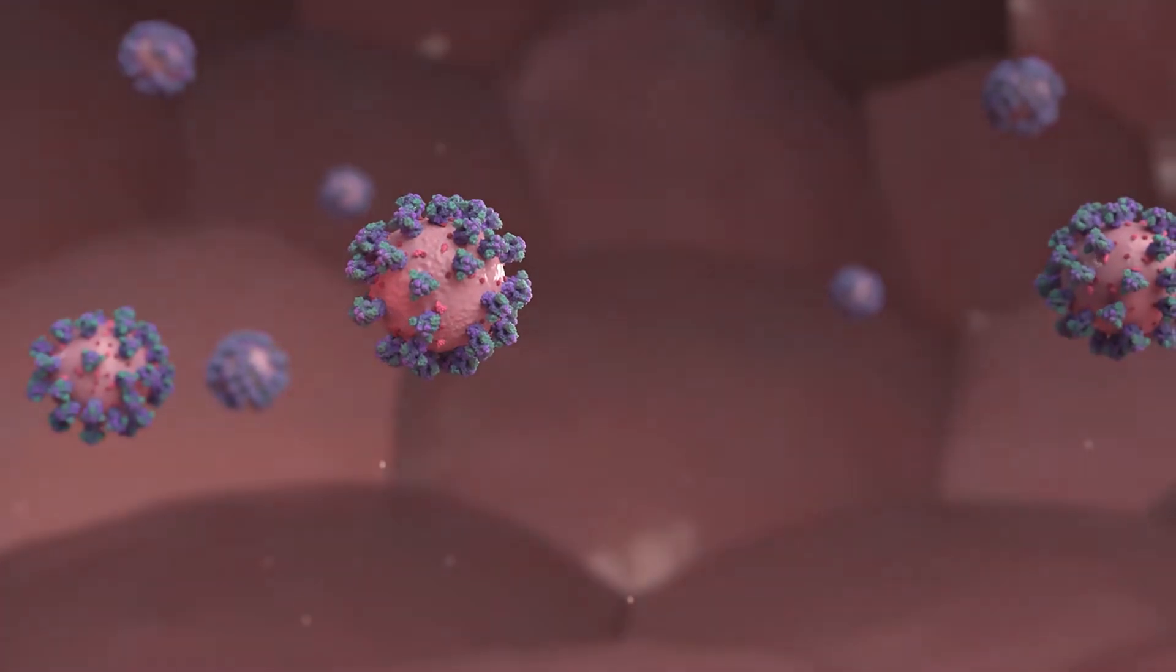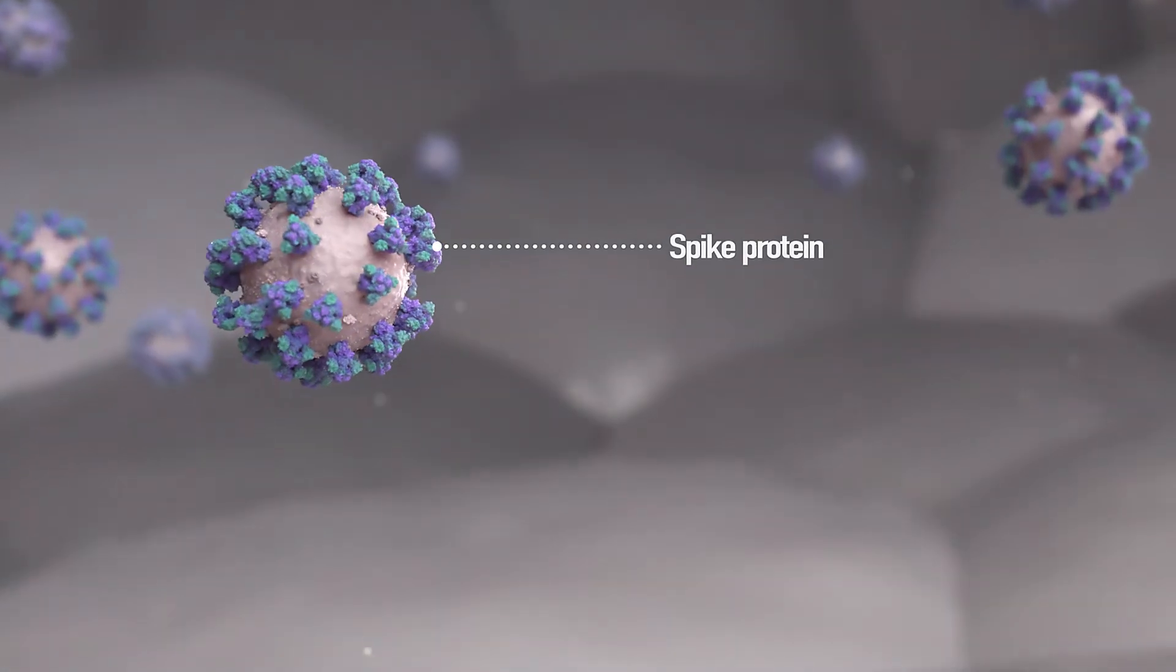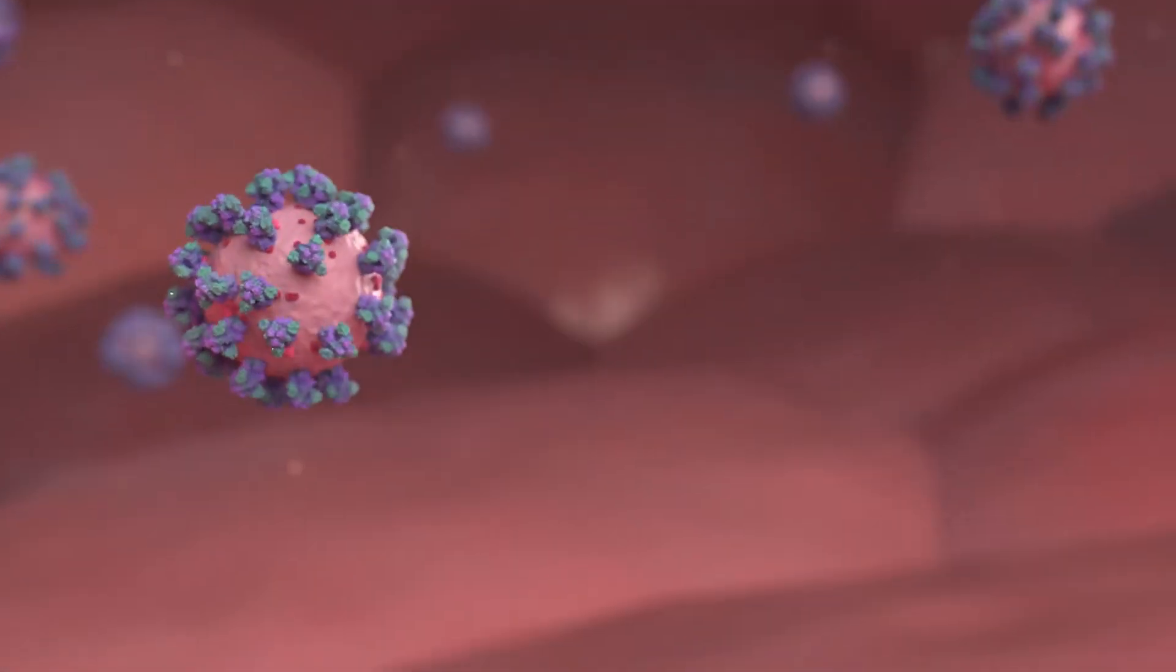Coronaviruses have a uniquely shaped protein called a spike protein on the surface, which is called a coronavirus because the shape of these proteins looks like a crown.